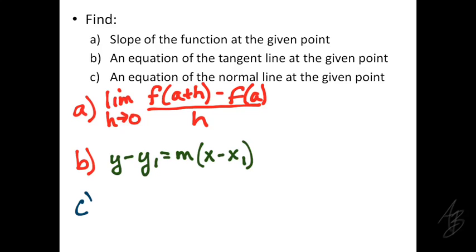The last thing will be the equation of the normal line. The key to remember here is that the slope of a perpendicular line is the opposite reciprocal — negative 1 over the slope of the tangent line. We will use the slope of that normal line along with the given point, because the normal line goes through the same point that the tangent does, and we can write that in point-slope form also.